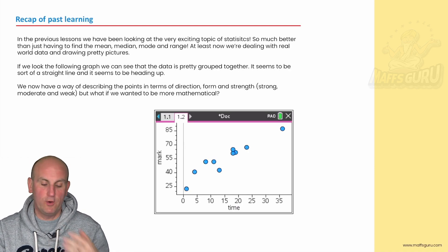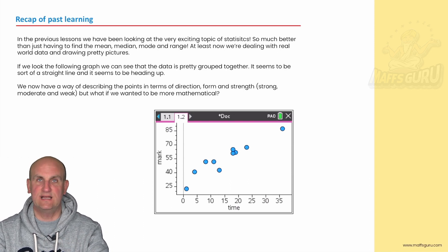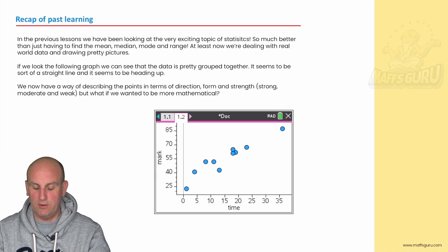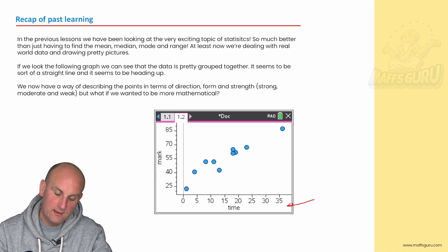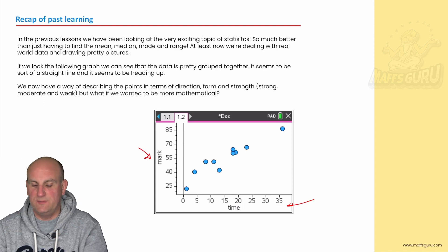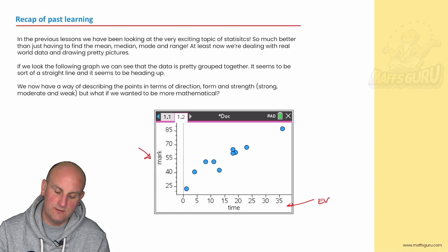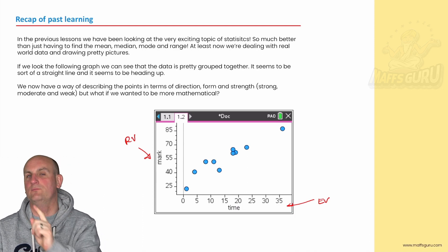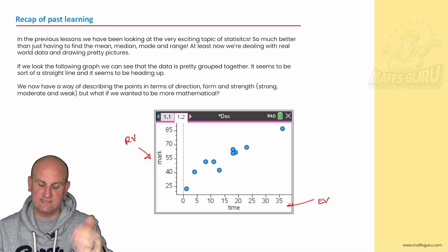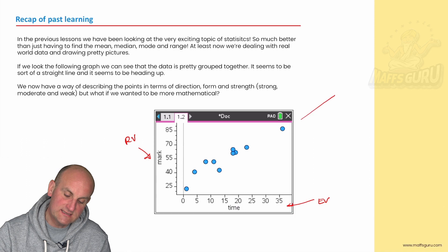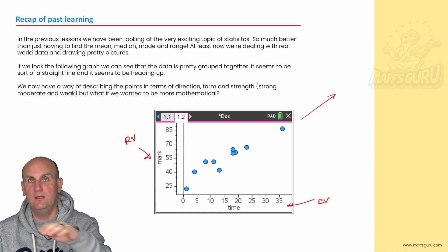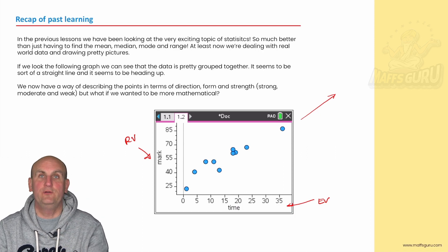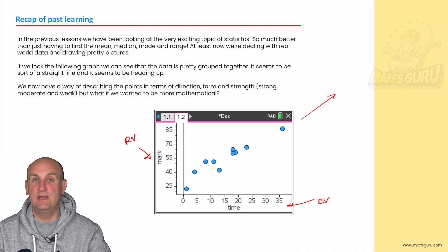In past lessons, we've got you to be able to use your CAS to plot a scatter graph. When we have two numerical data items, then we can plot them and show them in a scatter plot. As we can see here, we've got time on the bottom and we've got the mark here. Always remember that the EV is on the bottom and the RV is up the side. The RV is what we're predicting. Remember the context of the question, the amount of time spent revising and the scores on tests. What we notice here is there is a relationship. It seems to be that as the time increases, our test score increases.